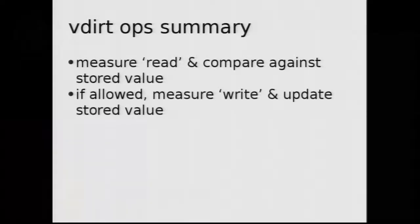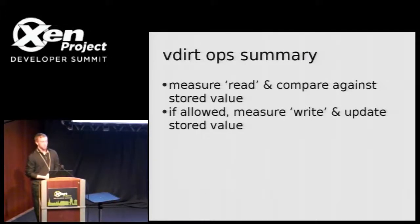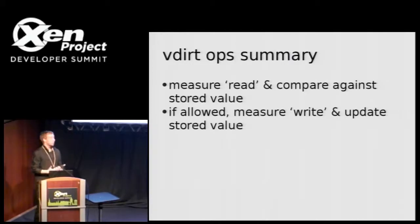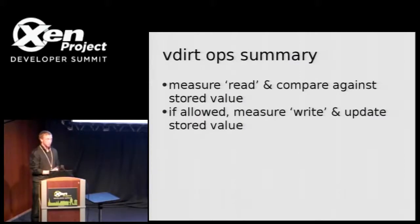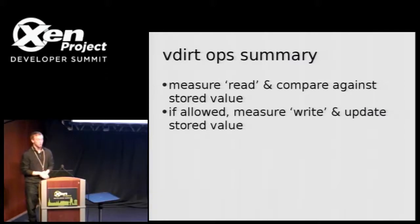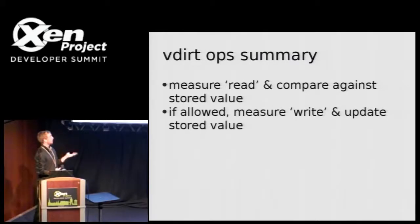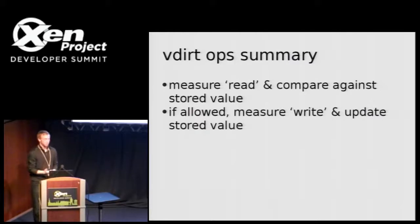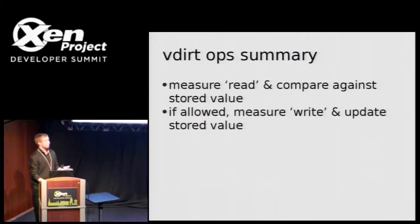The idea here is that instead of incurring this large performance penalty at VM boot time, we can amortize this bottleneck by measuring over the course of the VM as it's running. The core of VDirt is really pretty simple — it's very similar to Tripwire. When the DOMU invokes a read, VDirt intercepts the data before it's sent back to the DOMU and compares the stored hash for that particular block with a hash of the recently read block. Similarly for write operations, the block is hashed, committed to disk, and the list of hashes is updated in memory — if the VM is allowing writing to disk.